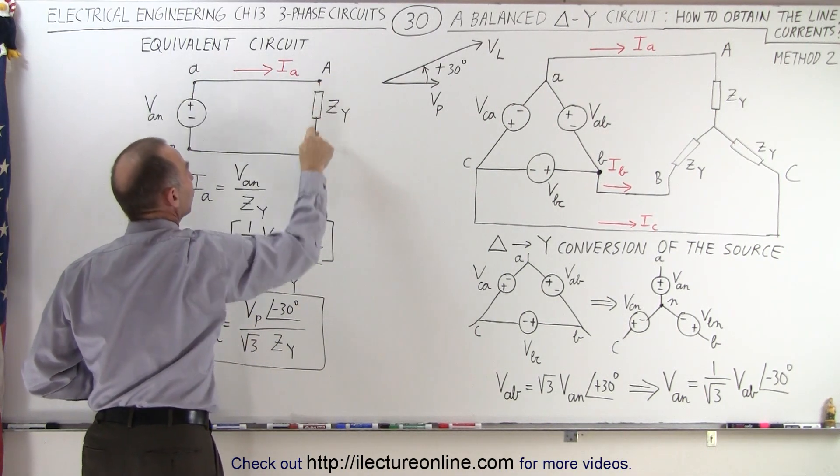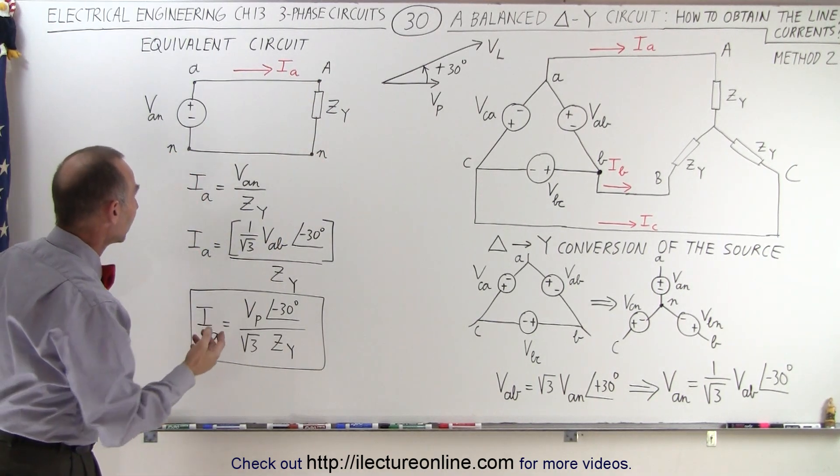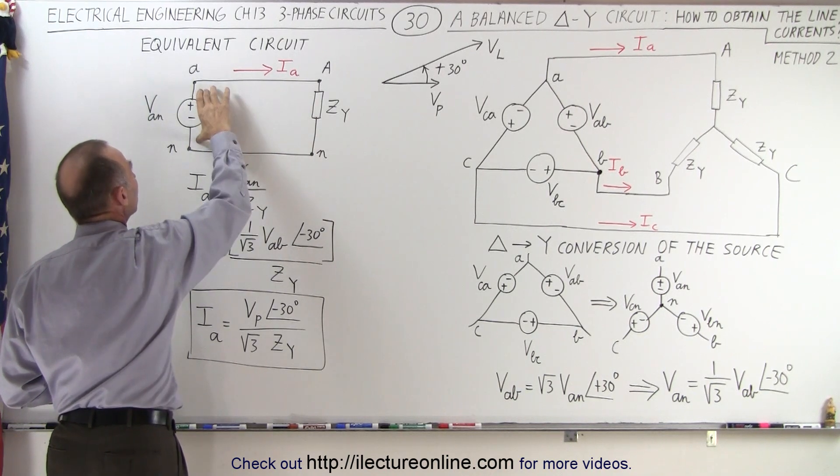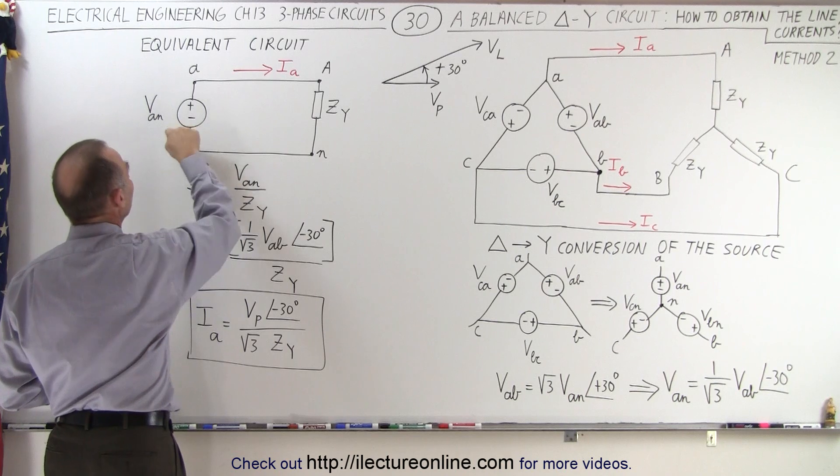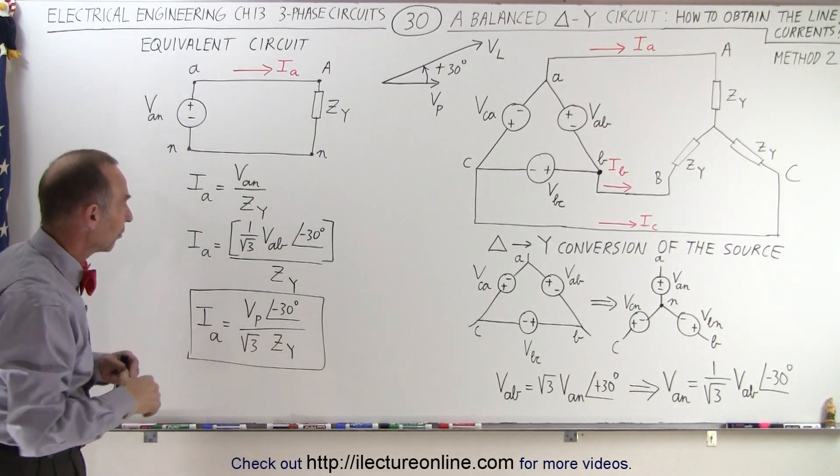...and the load from A to N on the load part of the circuit. And then we realize that IA, the line current, is going to be equal to the voltage here divided by the impedance there, the voltage An, which is the phase voltage, divided by the load impedance. Of course, that's the equivalent phase voltage.